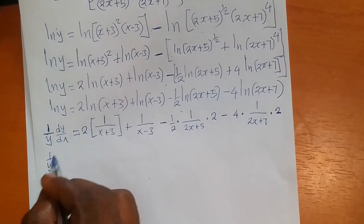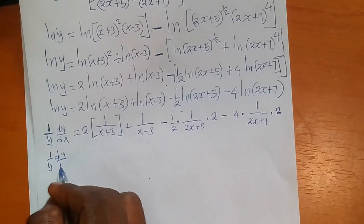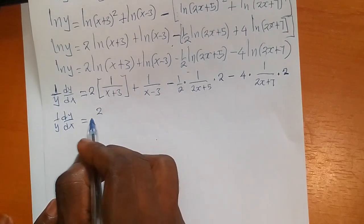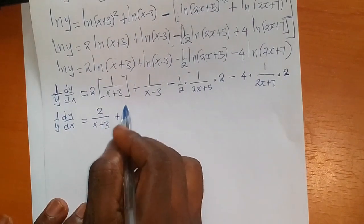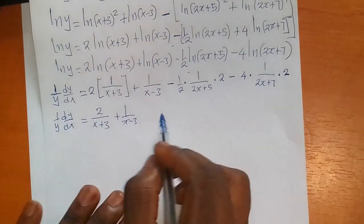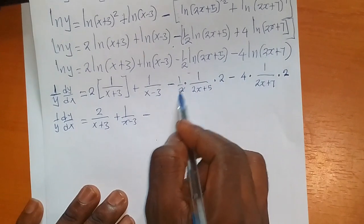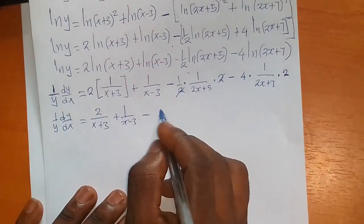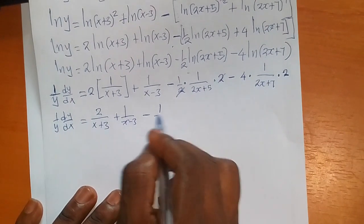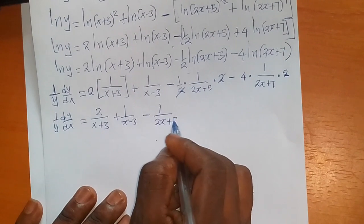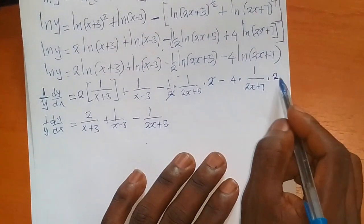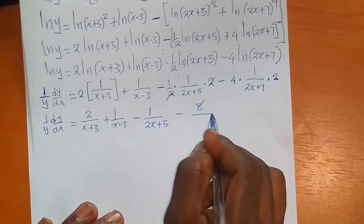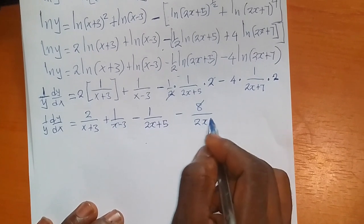Simplifying: (1/y)·(dy/dx) equals 2/(x+3) plus 1/(x−3) minus — the 1/2 and the 2 cancel — 1/(2x+5), and the 4 times 2 gives negative 8/(2x+7).